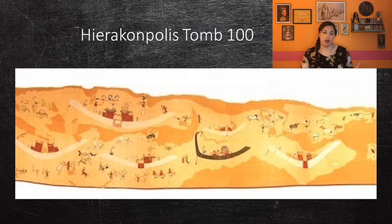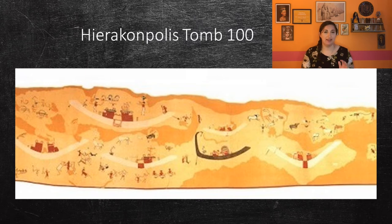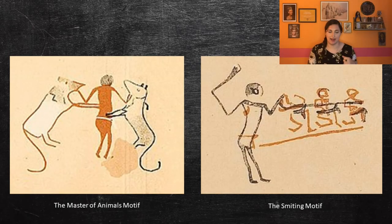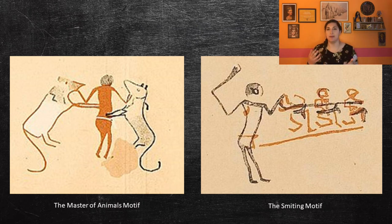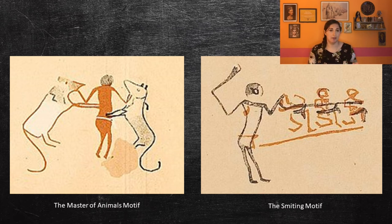A reconstruction of one of the murals shows a variety of boats, donkeys, ibexes, ostriches, lionesses, gazelles, cattle, and human beings. This also has some of the earliest examples of two important motifs in Egyptian art. The first is the master of animals motif, which shows one person holding up two upright animals on either side — an example of the belief of order over chaos. This mural also has evidence of the smiting motif, which typically shows a pharaoh smiting an enemy, holding their hair while wielding a mace or axe. Later in this lecture, we're going to talk about the most famous example of this motif.